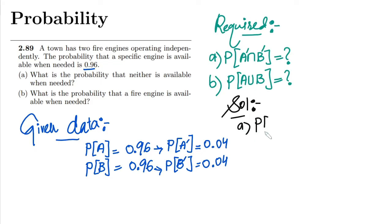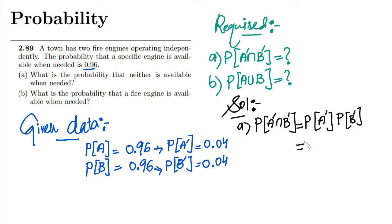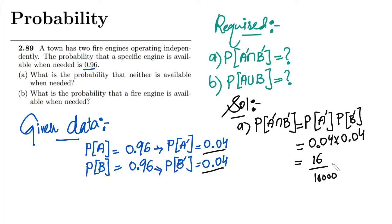For part A, we need P(A' ∩ B'). Since both events are independent, we can multiply their probabilities. So it would be 0.04 multiplied by 0.04, which gives 0.0016. This is the probability that neither engine is available when needed.